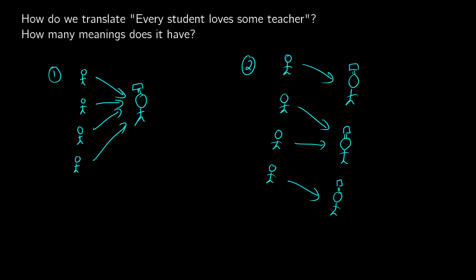So it's an ambiguous sentence. It has multiple different meanings. So we say that in each meaning there's a difference in scope.